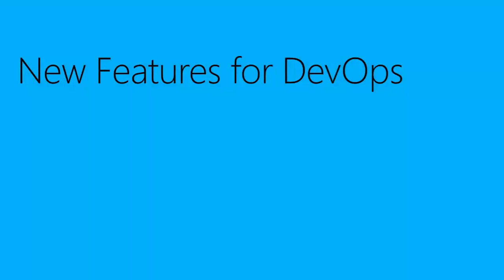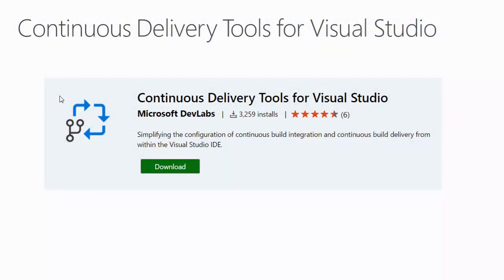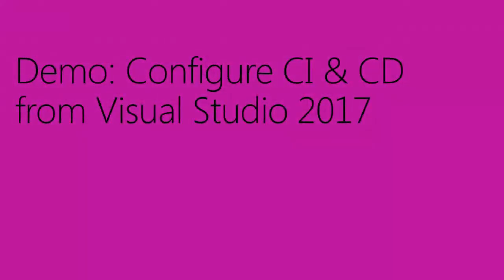One of the main features Microsoft is enhancing is continuous delivery and the DevOps ecosystem. One of these features is the Continuous Delivery Tools extension for Visual Studio 2017, developed by Microsoft Dev Labs. It's deployed to the marketplace — you can download and use it, though it is unsupported. The main idea is to give you more options for continuous integration and continuous delivery: automatically creating a build, release, and running that in the background, then deploying to Azure or the cloud.